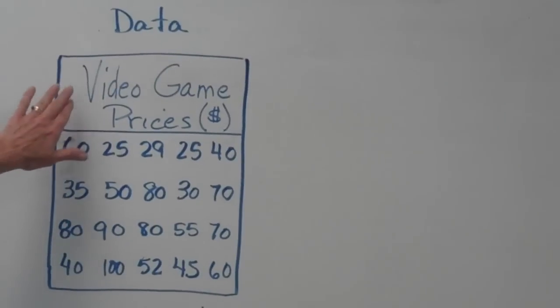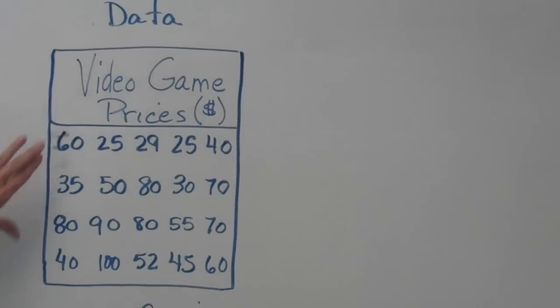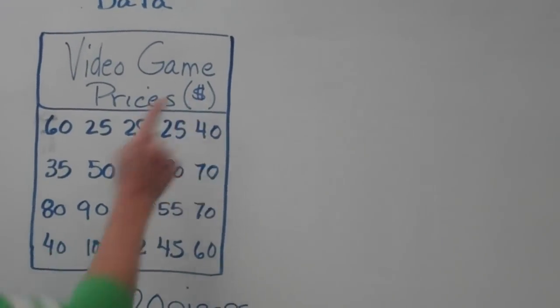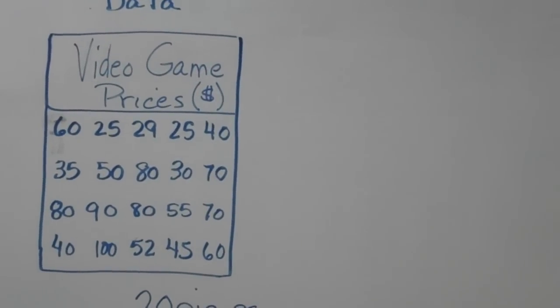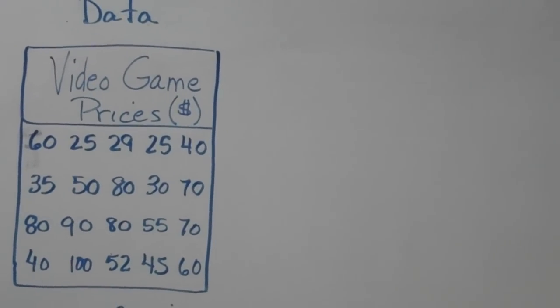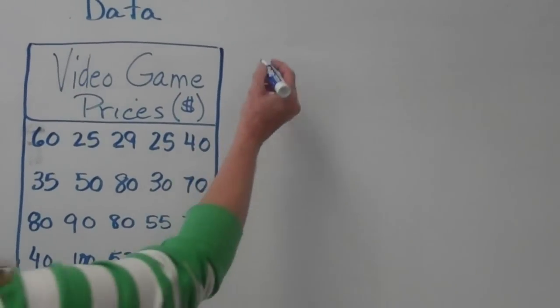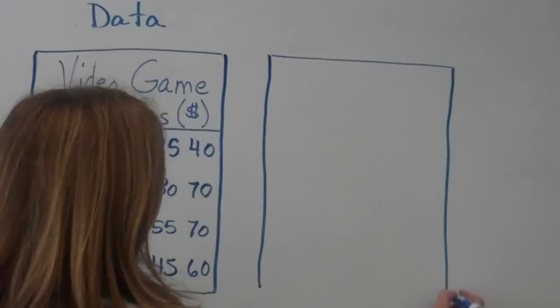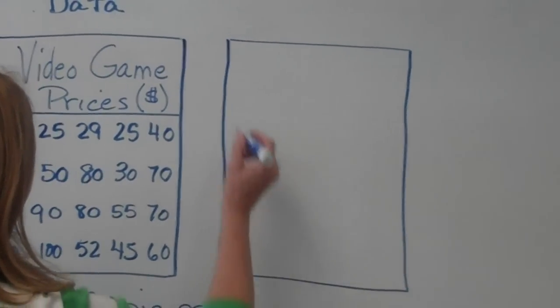As you can see, the title of our information is Video Game Prices and all of our prices are listed here. We did note that that is in dollars. Now we're ready to create our frequency table. Over to the side, draw a little table.